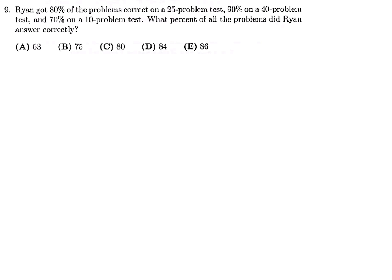Ryan got 80% of the problems correct on a 25-problem test, 90% on a 40-problem test, and 70% on a 10-problem test. What percent of all problems did Ryan answer correctly? So 0.8 times 25 questions is how many he got correct. That's 20. On the next test, it's 0.9 times 40, and that's 36. And then 0.7 times 10 is 7. So this represents the total number of questions he got correct. If you add those up, it's 63. So to get the overall percentage, you divide 63 by the total number of questions on those three tests, which is 25 plus 40 plus 10, which is 75. And this percentage is 84 percent. So number 9, the answer is D.